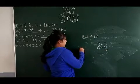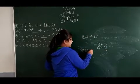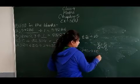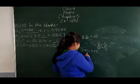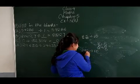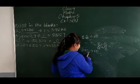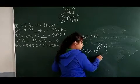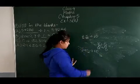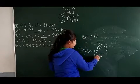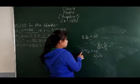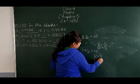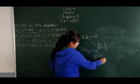If I divide 745 by 10, then the one's place digit — which is 5 — becomes the remainder, and the remaining digits — 74 — become the quotient.